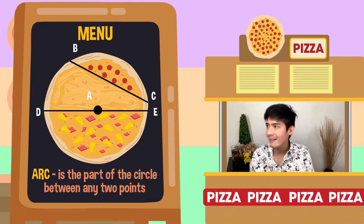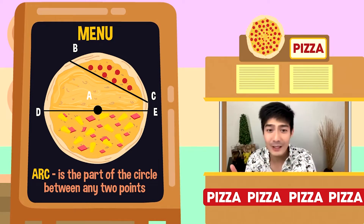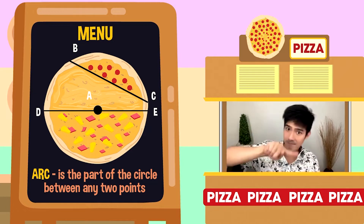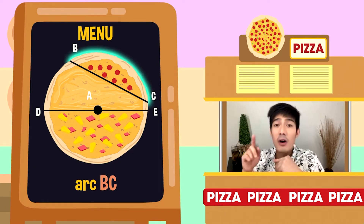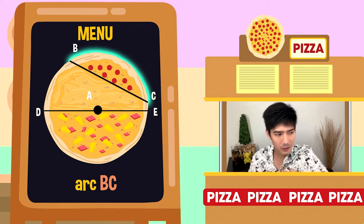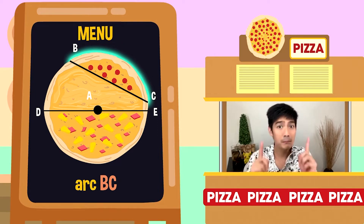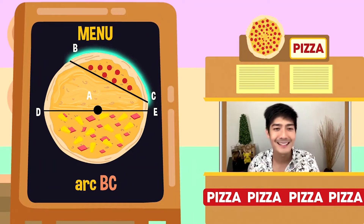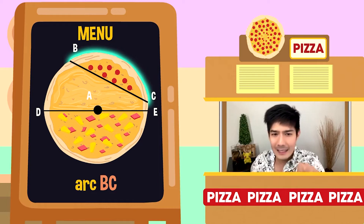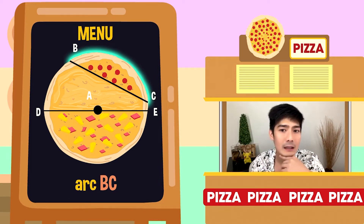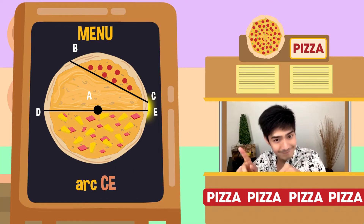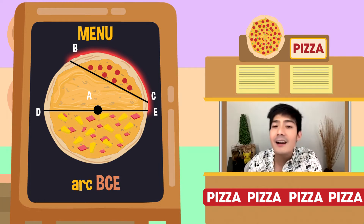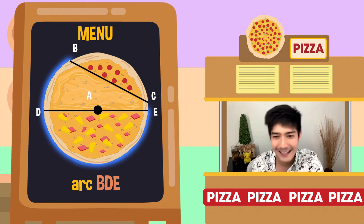May isa pa tayong part na hindi nagbabanggit — yung arc. Ano yung arc? Ito yung part of the circle between any two points — ito ay bahagi o portion ng circumference ng circle. Arc examples: pakita natin yung arc BC. Yung BC natin kanina — line yun, pwede maging chord, pwede maging segment, pwede rin maging arc kapag yung curve na yung pinag-uusapan natin. May nakita ba kayong arc sa ating circle? Meron tayong arc CE, meron ding arc CED, arc BCE, arc BDE, at marami pang iba.